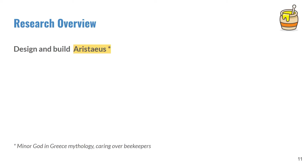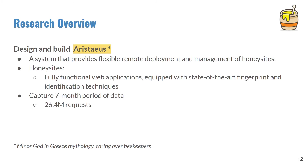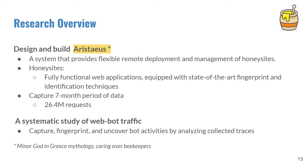We answer these questions by introducing a technique that avoids the issue of differentiating between users and bots through the concept of honey sites. We design and build ArrayStayers, a system that provides flexible deployment and management of honey sites. The honey sites are high-interaction honeypots with real web applications and full functionality, equipped with a series of state-of-the-art fingerprinting and identification techniques. Based on data captured over a seven-month period, we present a systematic study on internet bot traffic.